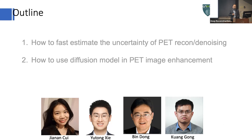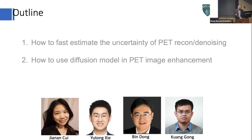The first topic I want to talk about is how to estimate the uncertainty of PET denoising. We presented some work at the last workshop, and we've done something new which makes the estimation faster — that's the key contribution. The second topic is how to use the diffusion model for paired imaging enhancement.